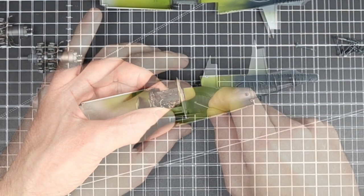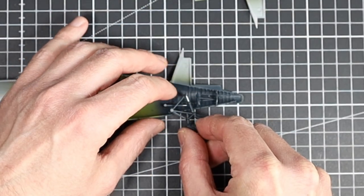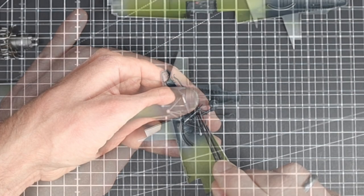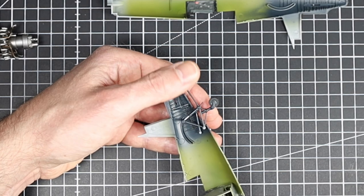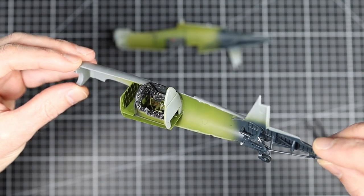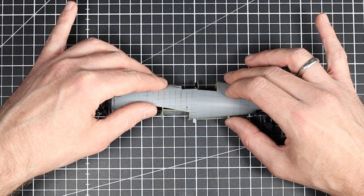The tail wheel suspension required some patience but overall there were no problems assembling the fuselage. I was pleasantly surprised at how everything came together. Of course you can't compare it with current kits from well known manufacturers, but if you take the time and prepare the parts well you will get a good result.